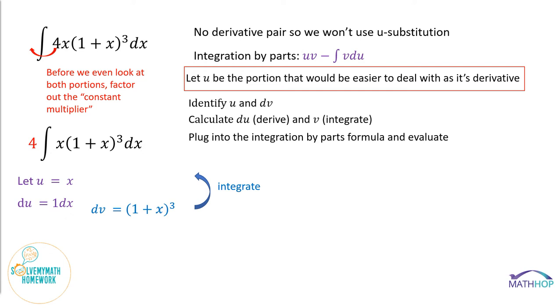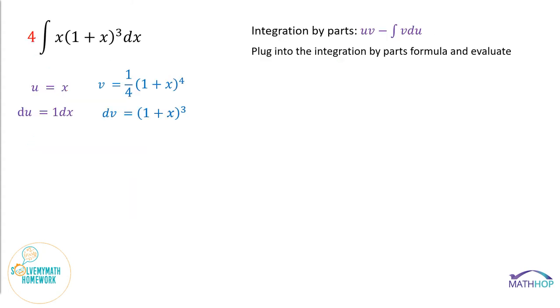Remember, basic integration: we are going to raise the exponent by 1 and then divide by that new exponent. And instead of dividing by 4, I'm going to put 1/4 out front. So I raised the exponent of 3 to 4 and multiplied by 1/4. Now I have every single thing I need, except maybe room on the screen. So let's get me some more room on the screen.